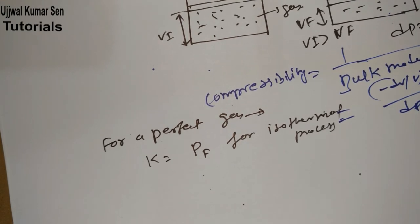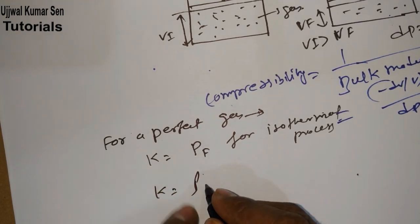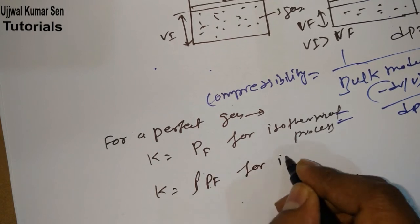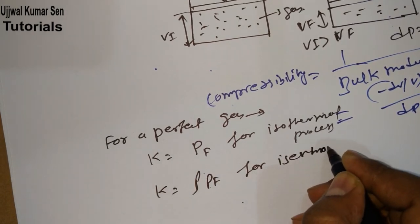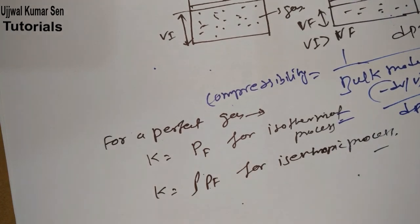For K equals gamma, here gamma is not density, I will tell you what is gamma, Pf for isentropic process.